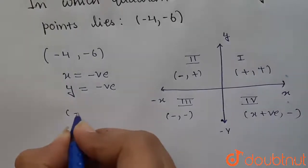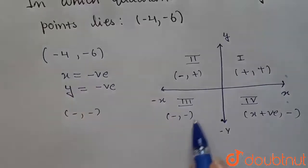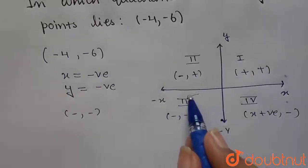Now, if we see we are given negative comma negative and we can see negative comma negative. This lies in which quadrant? It lies in the third quadrant.